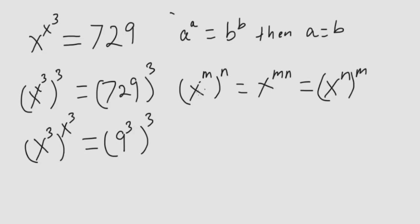So multiplying this cross, we have x cubed. The x cubed is equal to 9, multiplying across the 9. So now we have a to the a is equal to b to the b, so that a is equal to b.